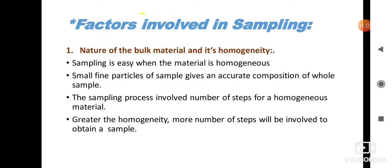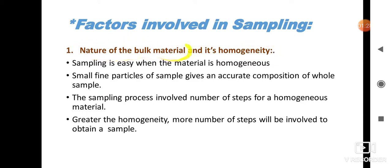Today we will start the factors affecting sampling. There are actually three major factors. The first factor is the nature of the bulk material and its homogeneity. Bulk material means the universe or the population. Sampling is easy when the material is homogeneous; if it is heterogeneous then the process will not be easy.